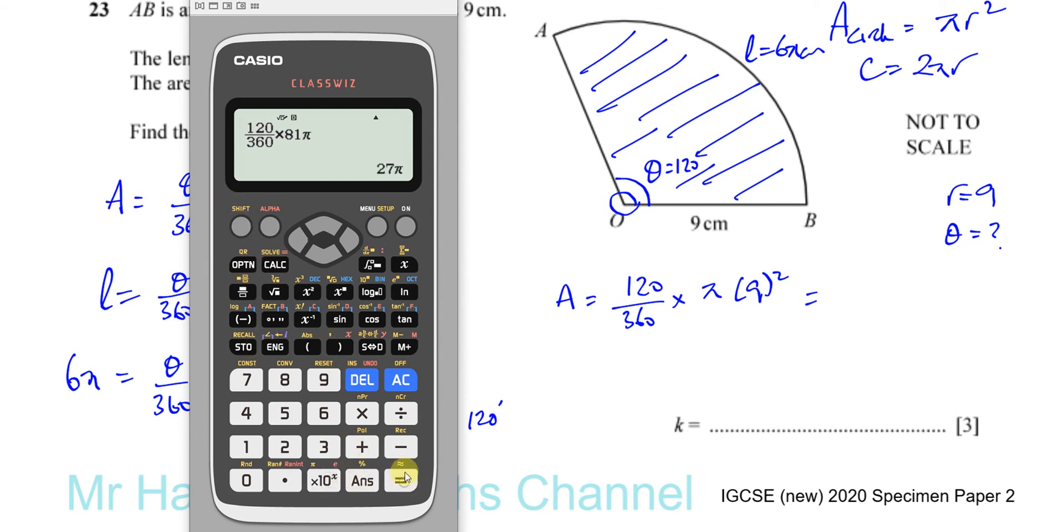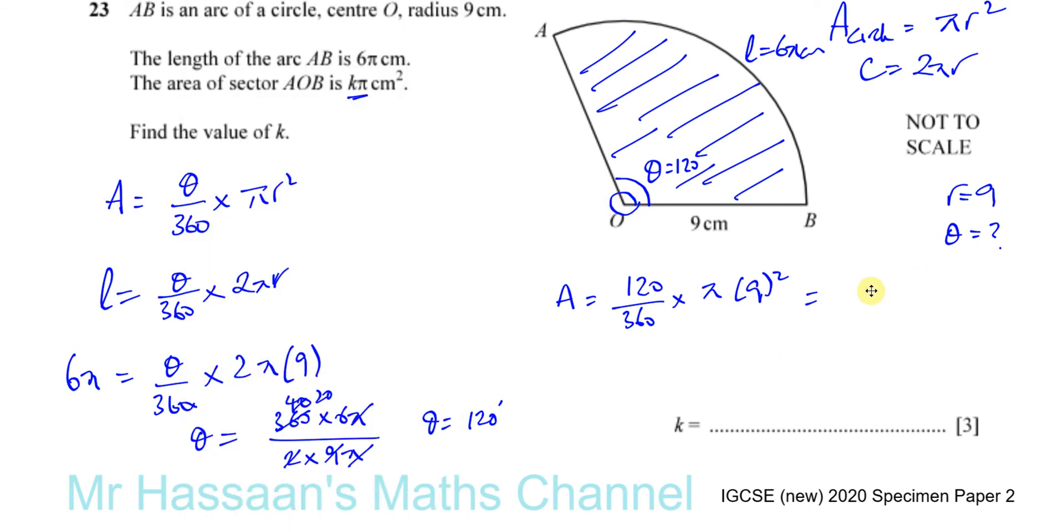That gives us 27π, so the area is 27π centimeters squared. Therefore, k equals 27. Simple as that.